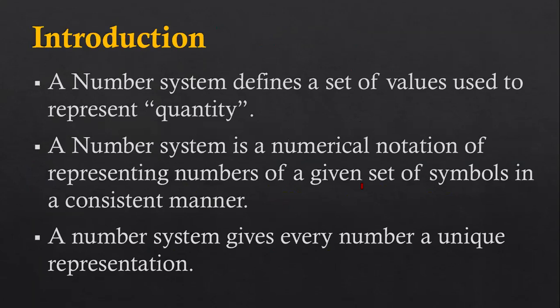A number system defines a set of values used to represent a quantity. In each number system, there will be some set of values used to represent a particular quantity. Second, a number system is a numerical notation of representing numbers using a given set of symbols in a consistent manner.